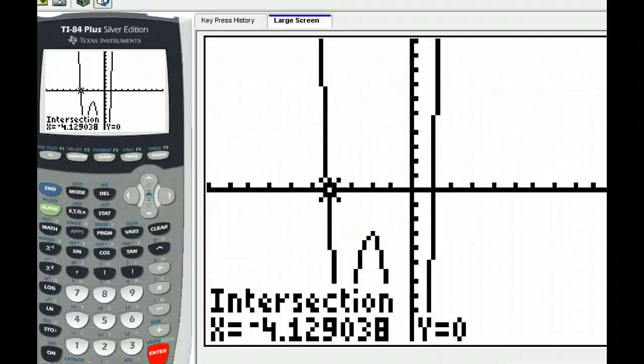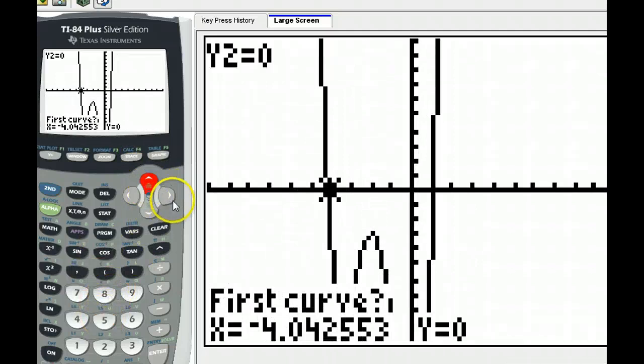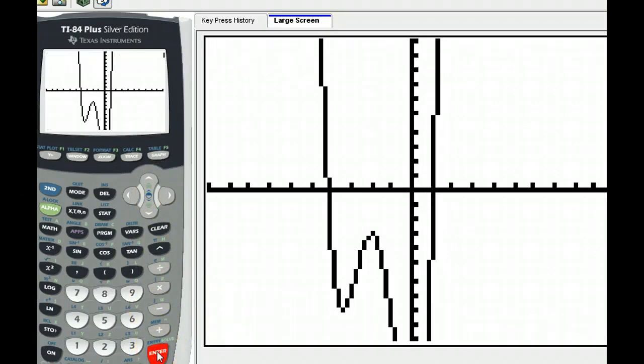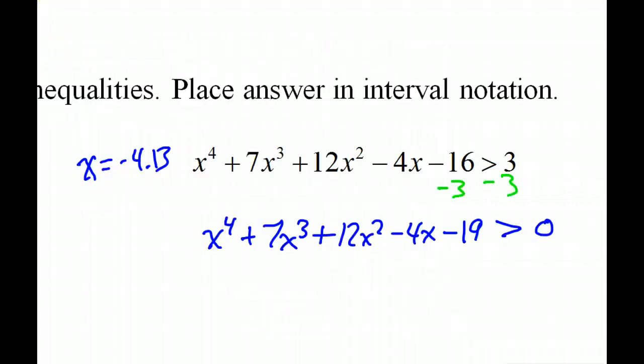And then I'm going to look for the second one. Again, second trace 5, up arrow to get on the x-axis. I'm going to get over to the second one. And I'm going to hit enter, enter, enter. Okay, so I have 1.06 for the second one.